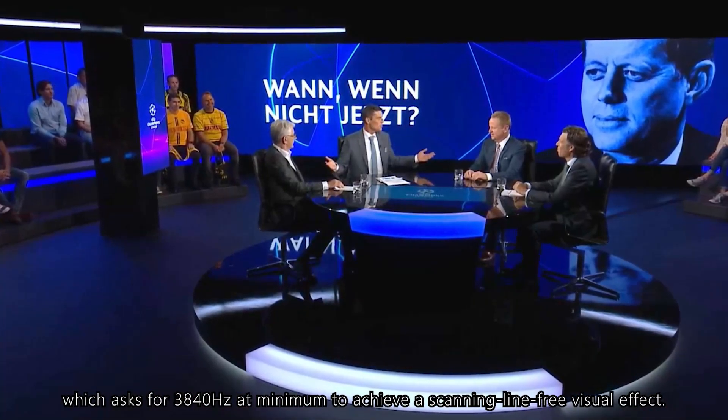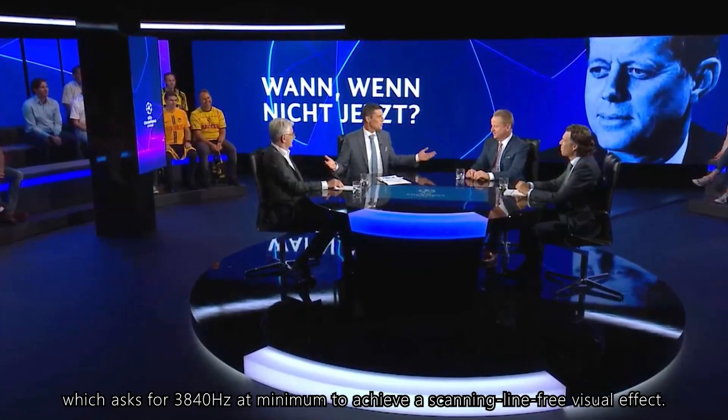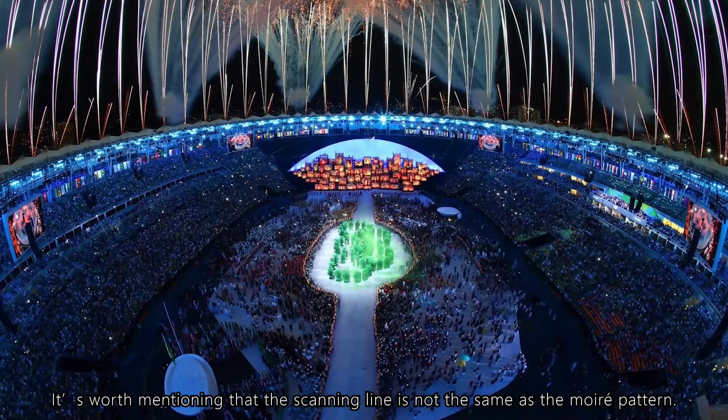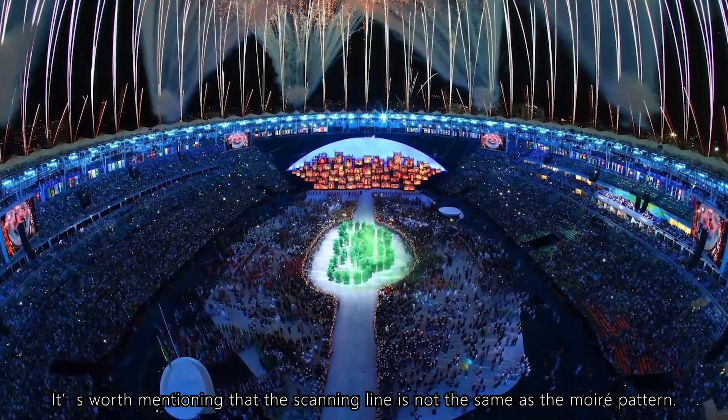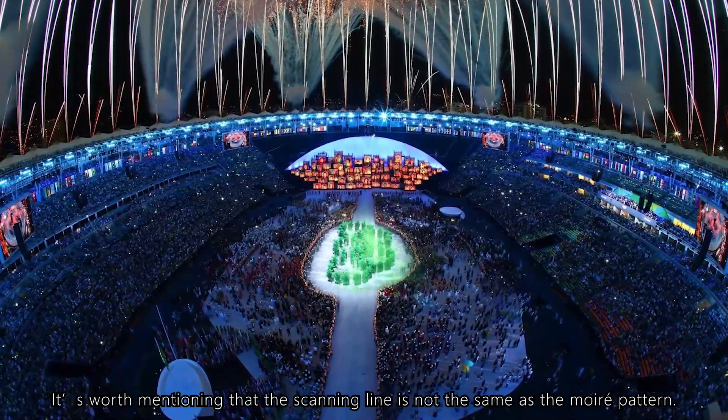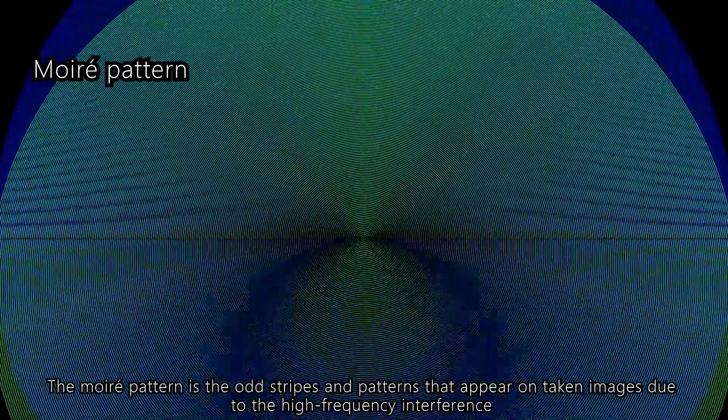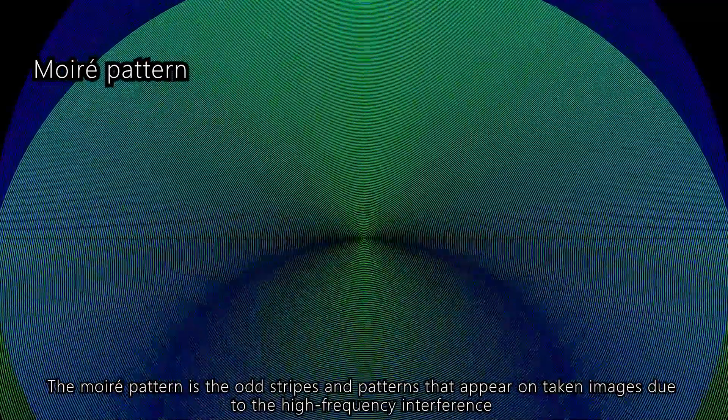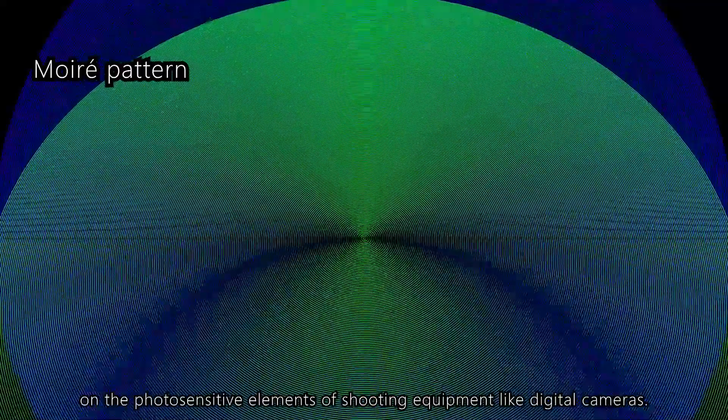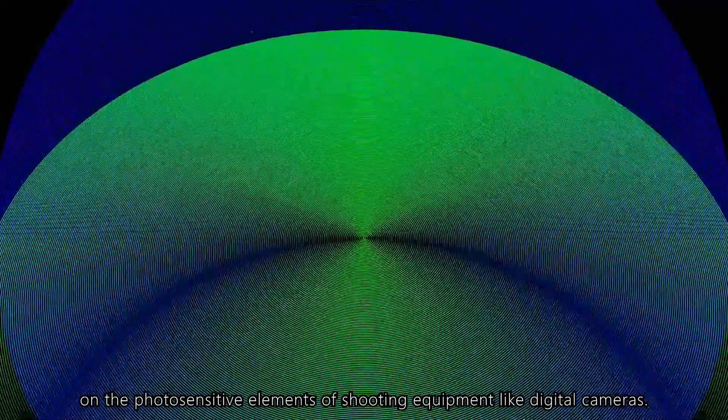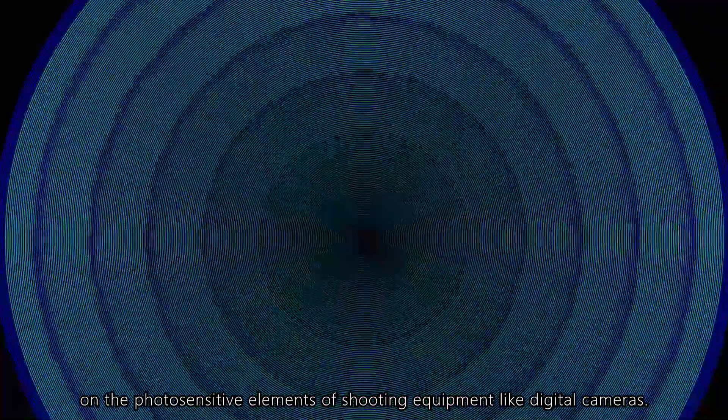It's worth mentioning that the scanning line is not the same as the Moiré pattern. The Moiré pattern is the odd stripes and patterns that appear on taken images due to the high-frequency interference on the photosensitive elements of shooting equipment, like digital cameras.